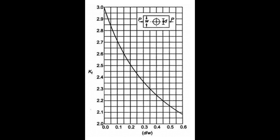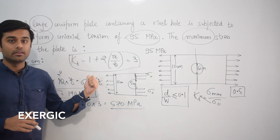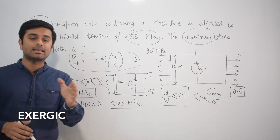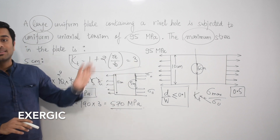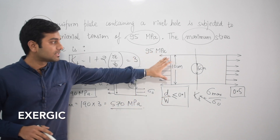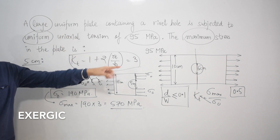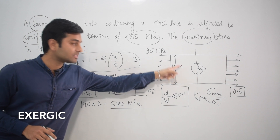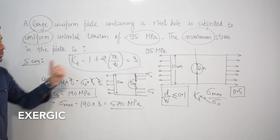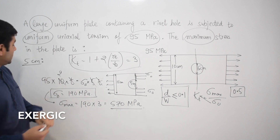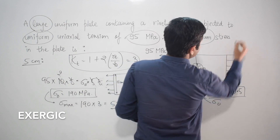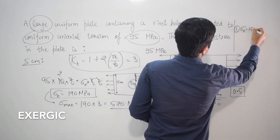From the stress concentration graph, when d/w = 0.5, the actual kt is 2.15, not 3. Using kt = 3 introduces significant error, and this graph is not accessible during the exam. So the 5 cm case is invalid. For reference: in Case 1 (5 cm), nominal stress = 190 MPa and maximum stress = 570 MPa, both incorrect.